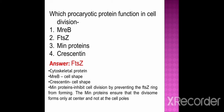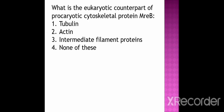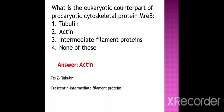What is the eukaryotic counterpart of prokaryotic cytoskeletal protein MreB? Option 1 tubulin, option 2 actin, option 3 intermediate filament protein, option 4 none of these. The correct option is actin. Tubulin is the eukaryotic counterpart of prokaryotic cytoskeletal protein FtsZ. Intermediate filament protein is the eukaryotic counterpart of prokaryotic cytoskeletal protein Crescentin.